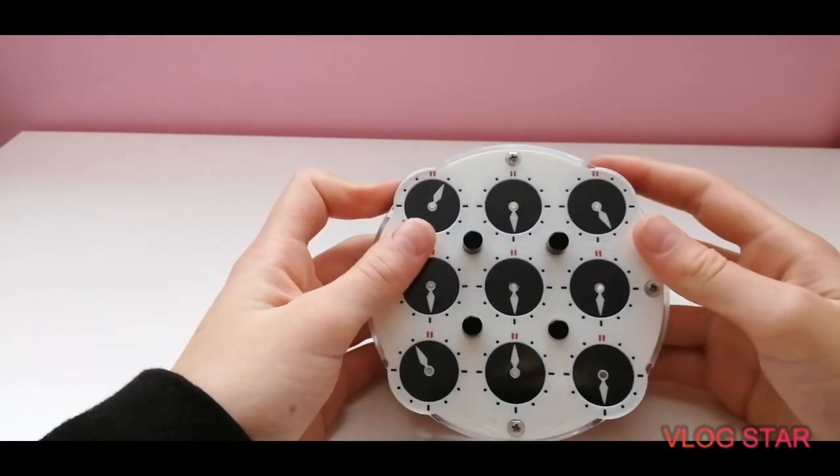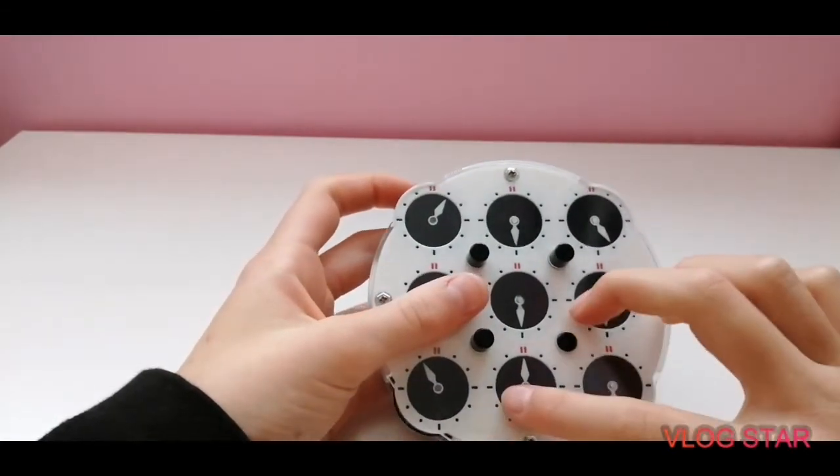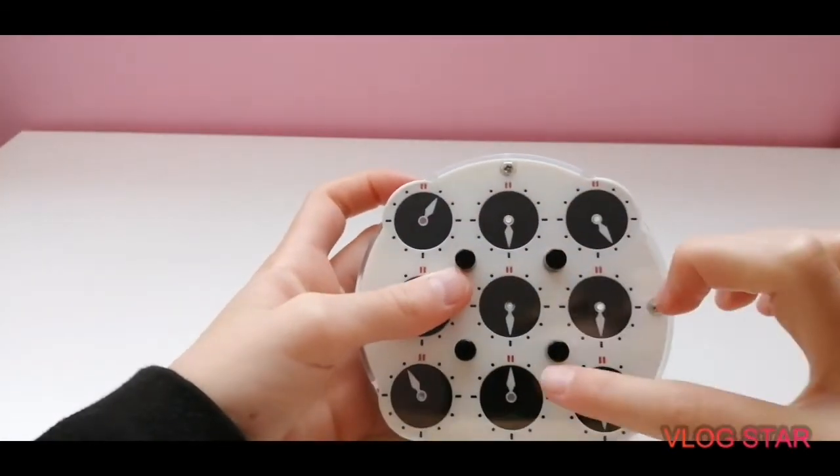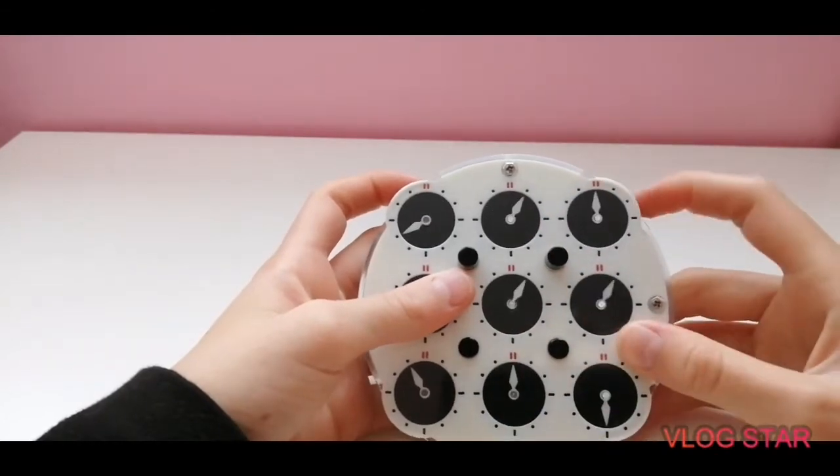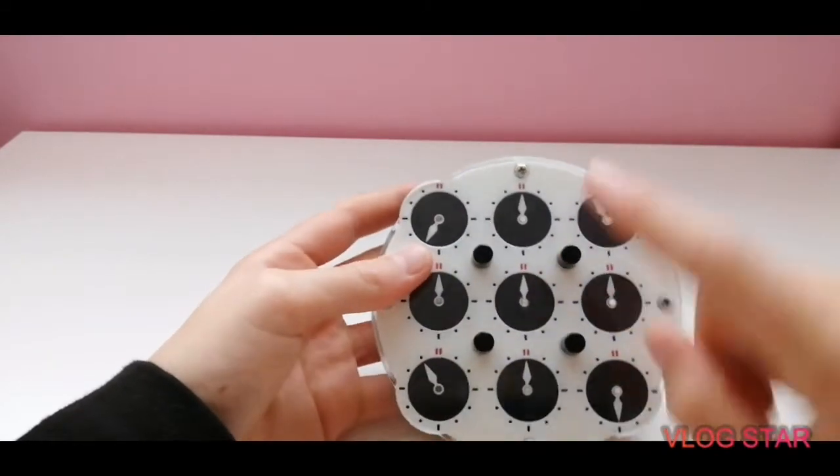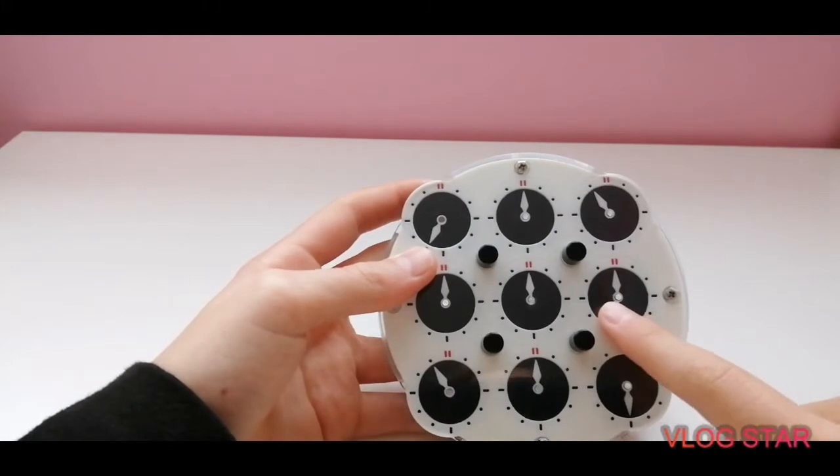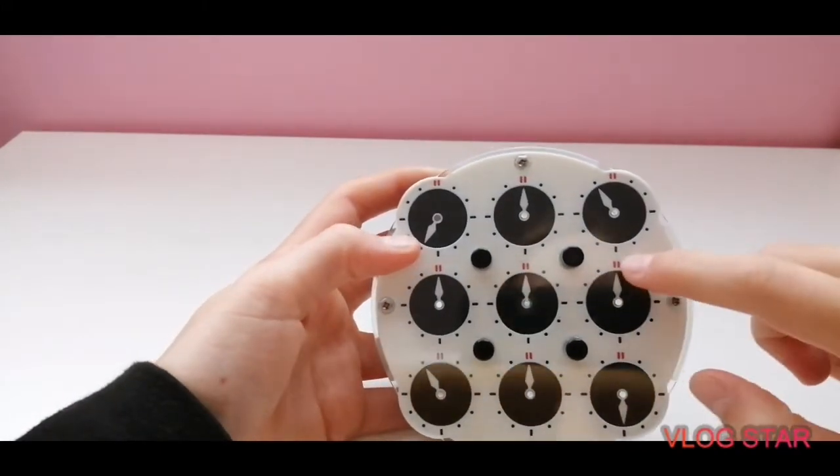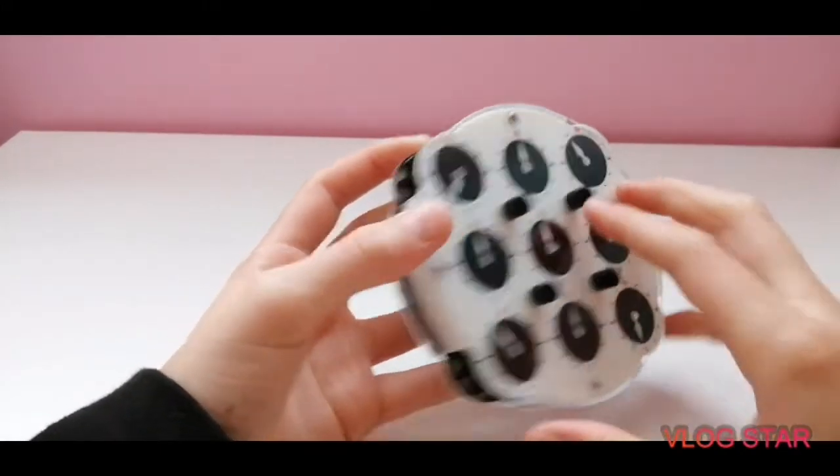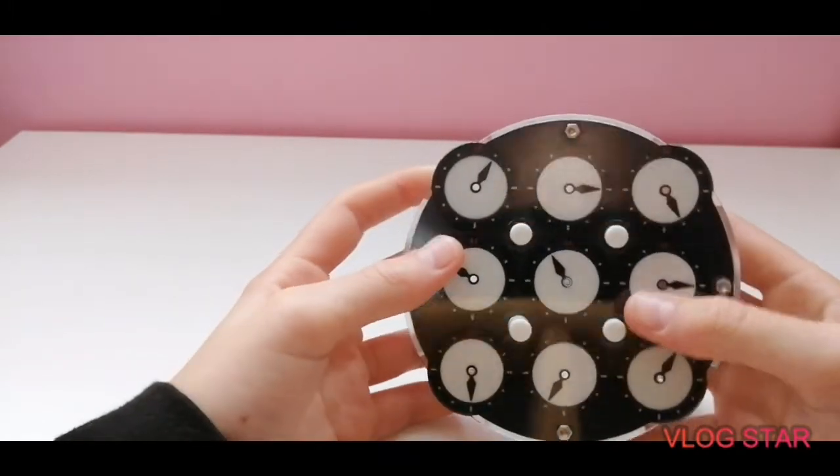There we go, so now you can see I've got a sort of cross like you would in a three by three, all pointing up towards these red lines. Now we turn it over and we do the same on the other side.